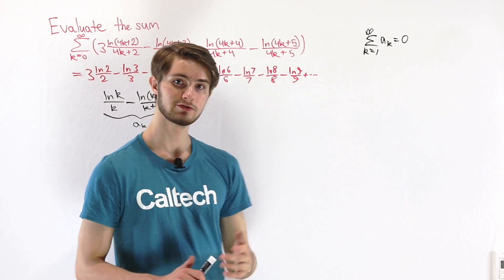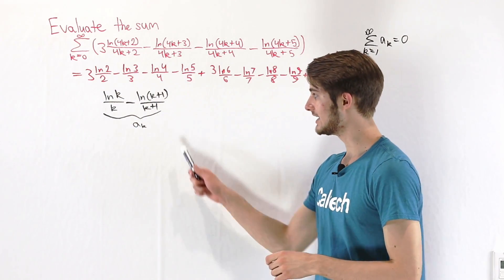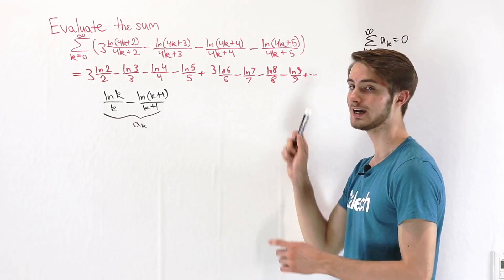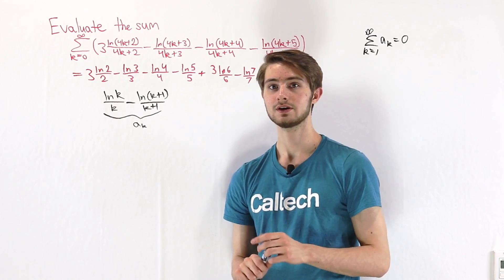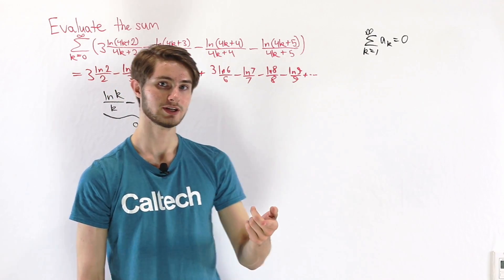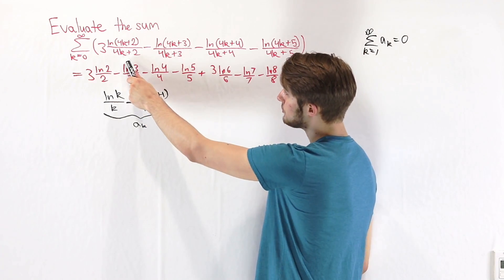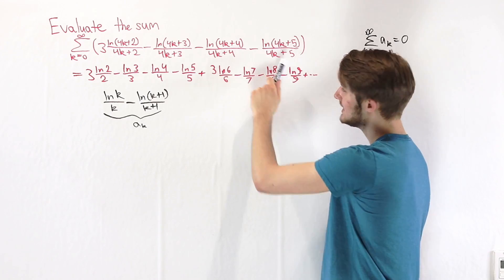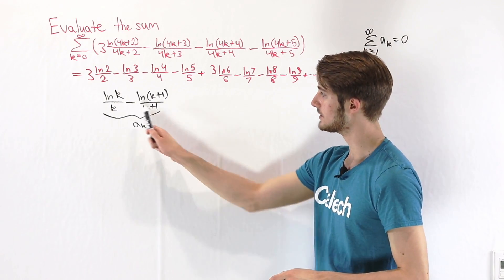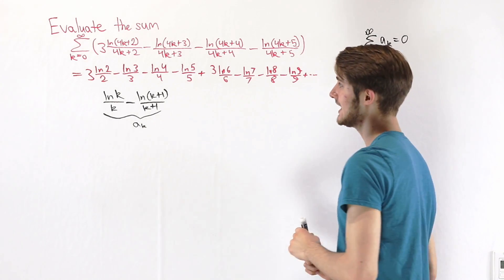We've solved a simpler version of the sum. But our original sum won't telescope as easily because the arguments of the natural logs keep increasing — 2, 3, 4, 5, 6, 7, 8, 9 — so there's no opportunity to cancel. However, if we can reframe this harder problem in terms of the simpler A_k, we can make progress. The reason this seems possible is that we have 3 times a positive term and then 3 negative terms, suggesting we might combine things in terms of A_k, which has one positive and one negative term.